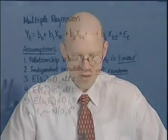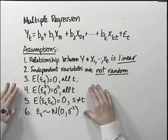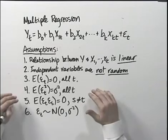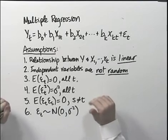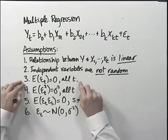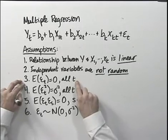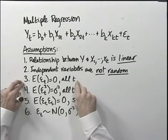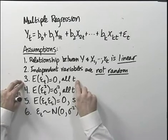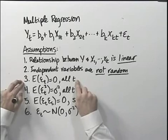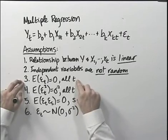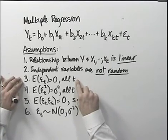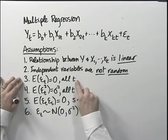The rest of the assumptions are all about the error term. The error term is where we get most of the statistical inference that drives the multiple regression model, so we're going to be very careful about what we specify. The first assumption is that the expected value of the error term is zero for every observation. I'm using the subscript t here to index these. We often use t to index observations when using time series data. We could also use subscript i for cross-sectional data, but it really doesn't matter which subscript you use.